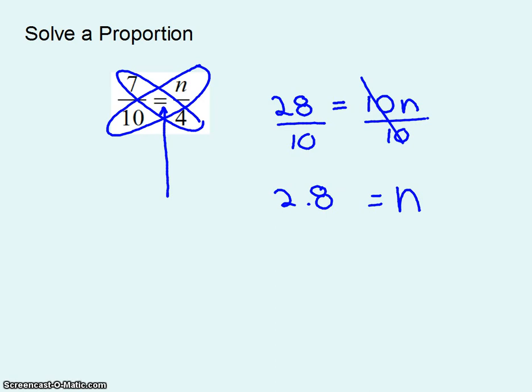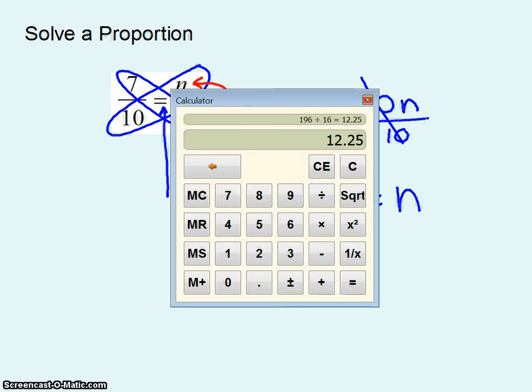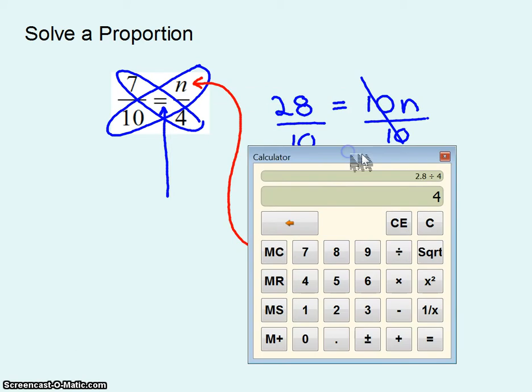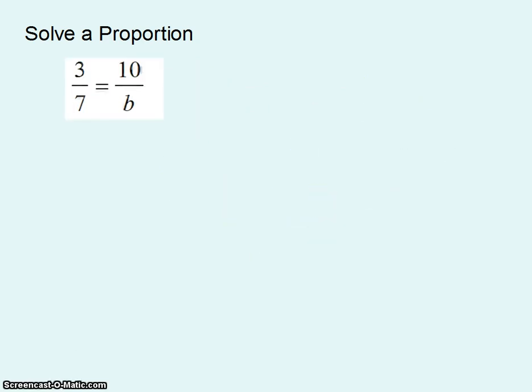And of course you can always check that answer by putting it in there. 7 tenths or 7 divided by 10 is 0.7 and 2.8 divided by 4 is also 0.7. Let's look at another one.